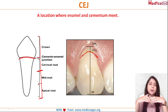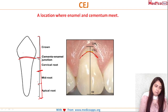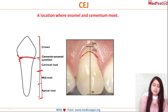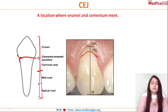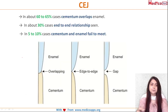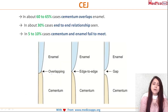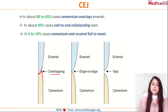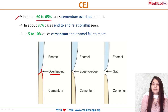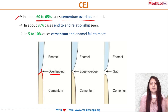It's not always end to end — instead, three varieties exist. The first is the overlapping type, where cementum overlaps part of the enamel. This is the overlapping type of CEJ, and it exists in around 60 to 65 percent of cases.